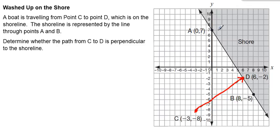The shore is represented by this line. Let me emphasize it. The shore is represented by this line which passes through points A and B. And what it says is determine whether the path from C to D is perpendicular to the shoreline. So basically all the question is saying is that if you consider the line that goes between C and D, and if you consider the line that goes from A to B, are those two lines perpendicular?